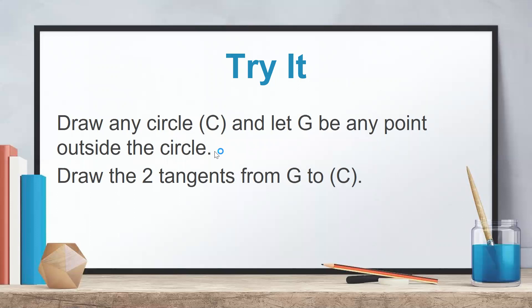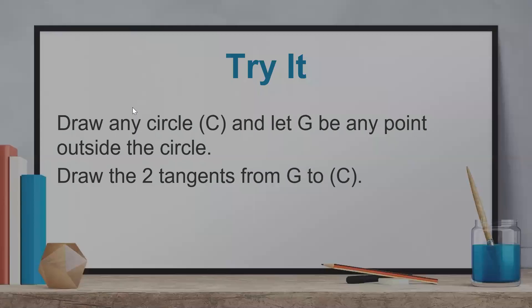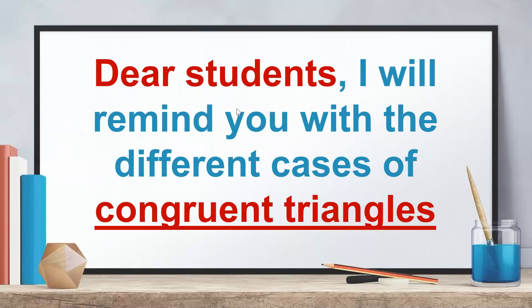Try this in your copybooks without sending: draw any circle C, let G be a point outside the circle, draw two tangents from G to C, and measure the tangents with your ruler to compare their lengths. I will remind you of the different cases of congruent triangles: Angle-Side-Angle, Side-Angle-Side, Side-Side-Side, and for right triangles, Hypotenuse-Acute Angle or Hypotenuse-Side.